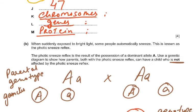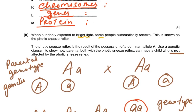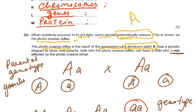When suddenly exposed to bright light, some people automatically sneeze. This is known as the phototick sneeze reflex. This reflex is a result of possessing a dominant allele. If someone has a dominant trait, they can only be either homozygous dominant or heterozygous — you must remember this for genetics questions.